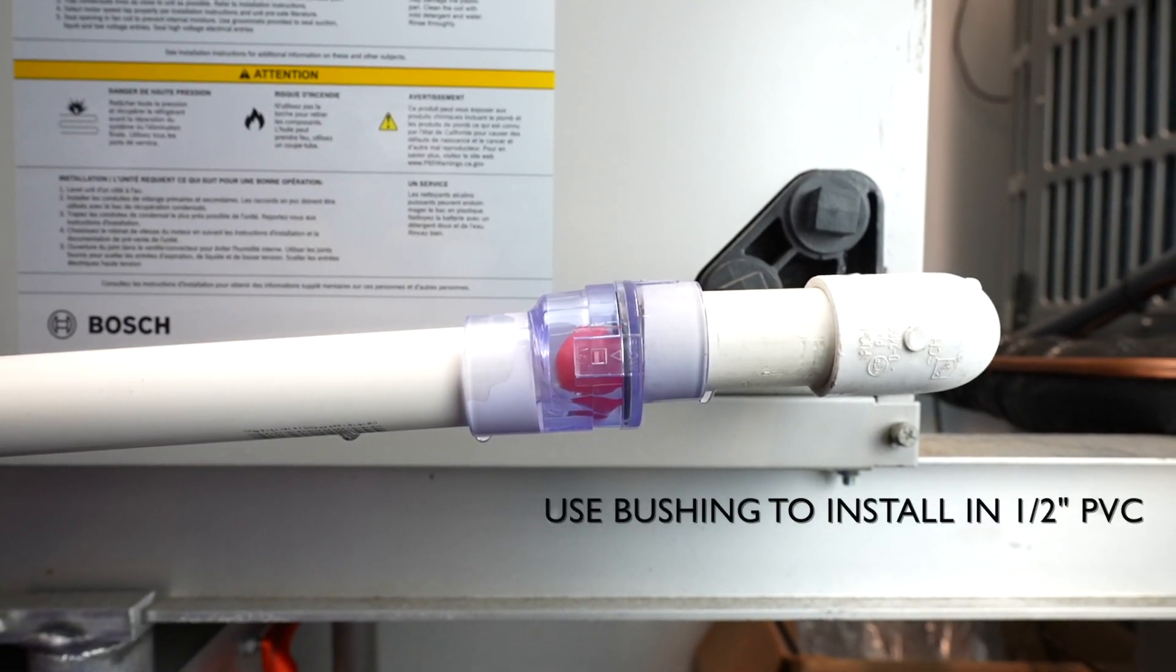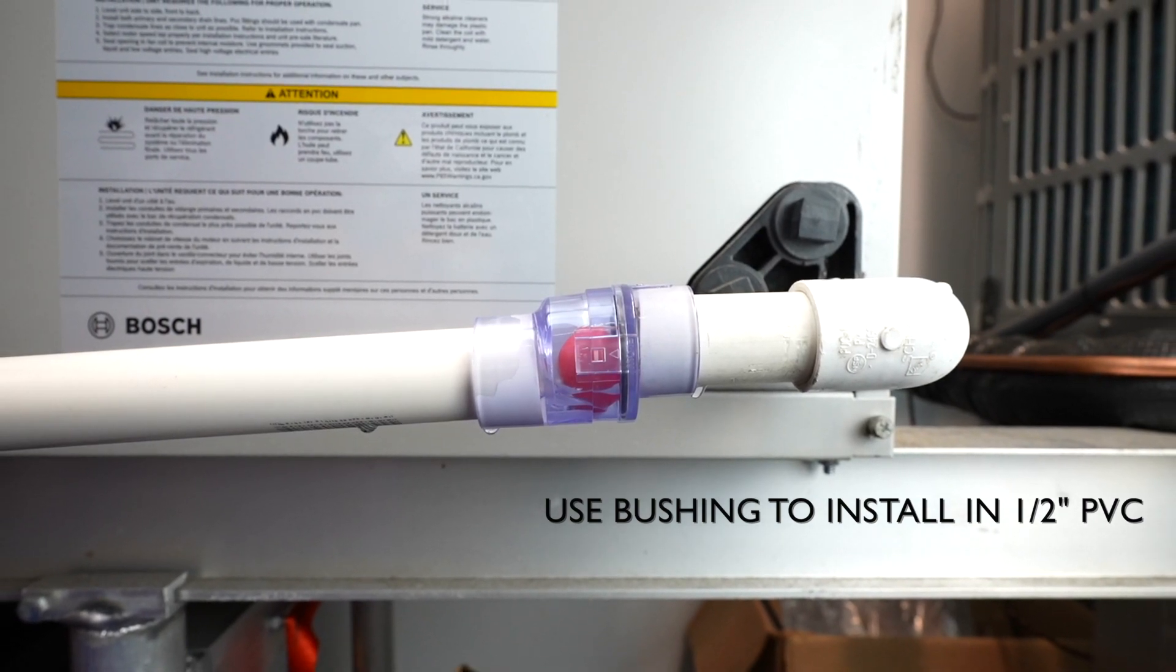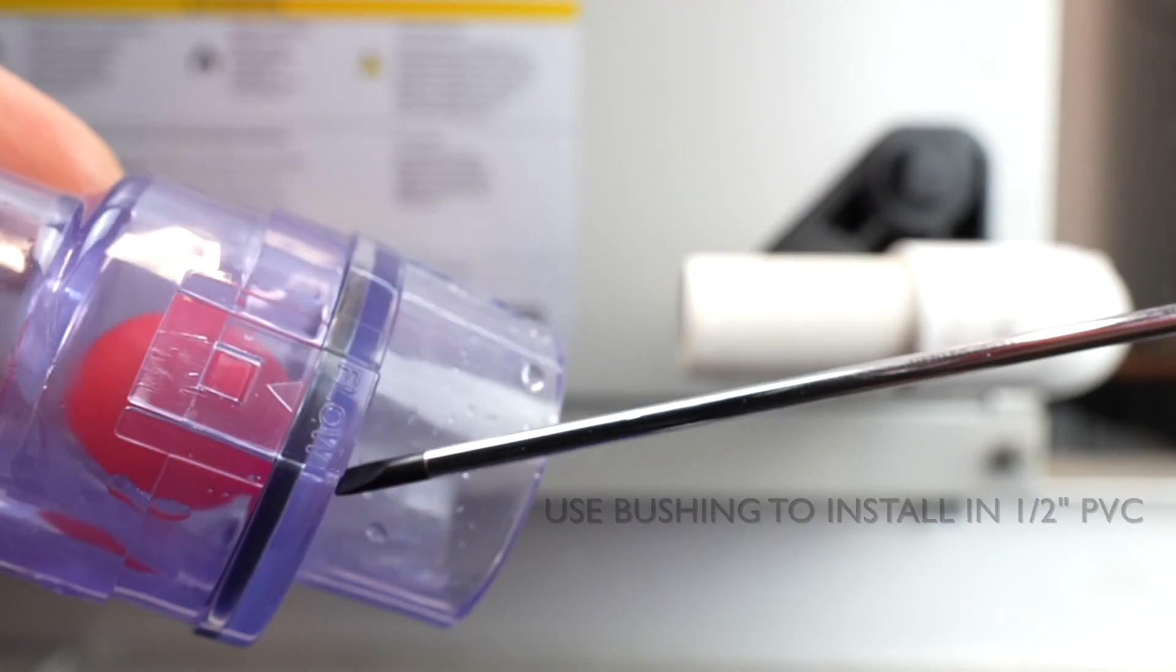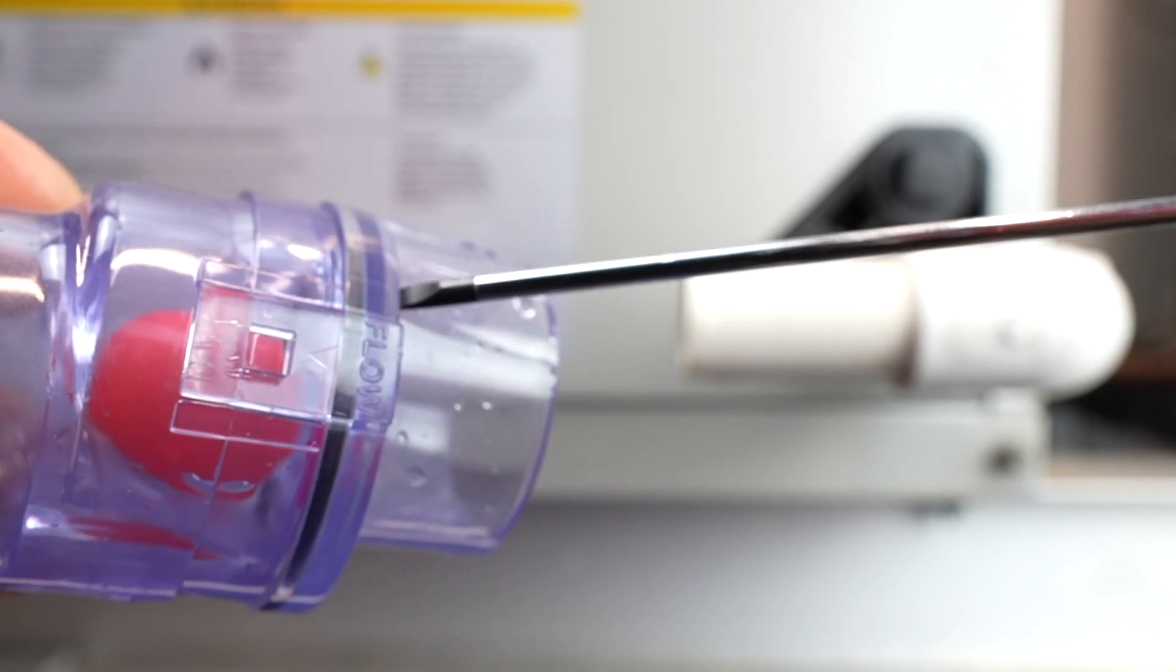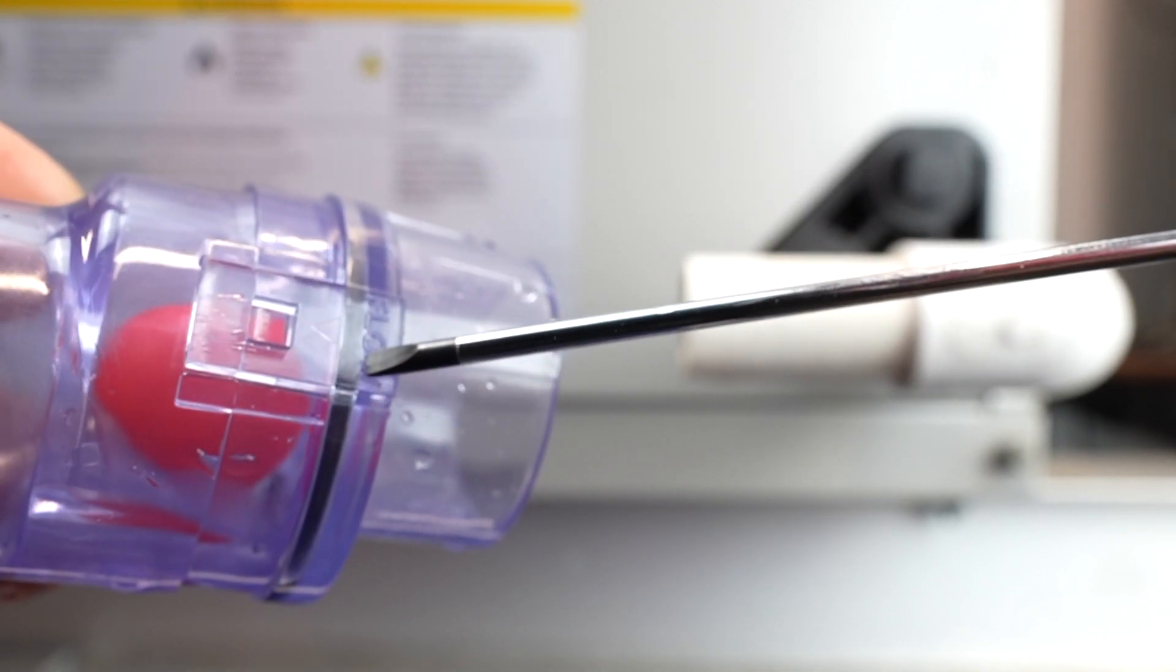Now let's take a look at how easy the W-Trap is to install. The W-Trap is designed to be installed in the horizontal position in a 3/4 inch schedule 40 PVC condensate line. Place the flow arrow on the W-Trap in the direction of the condensate flow.